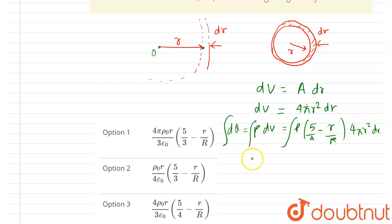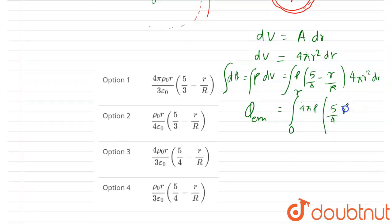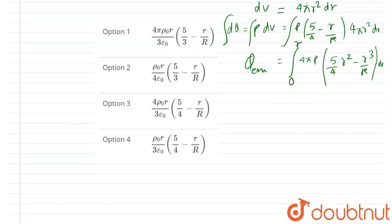Q_enclosed equals the integral from 0 to r of 4πρ₀ times (5/4 − r/R) times r² dr. Since 4πρ₀ is constant, it comes outside the integral, giving 4πρ₀ times the integral of (5/4 · r² − r³/R) dr.